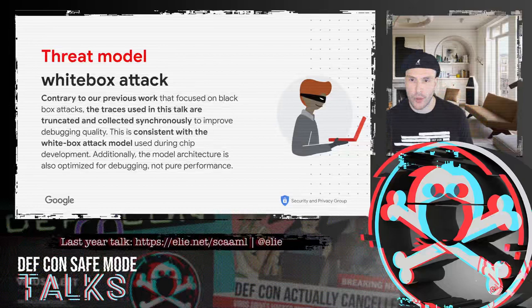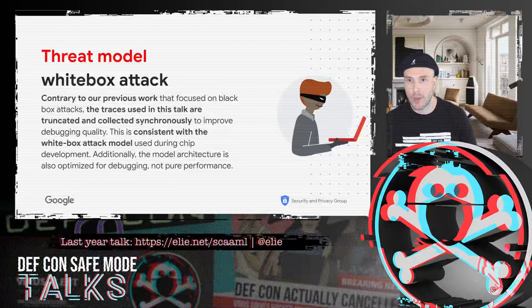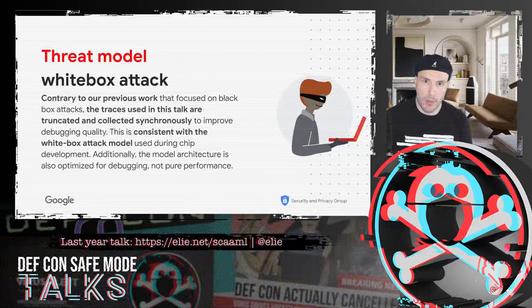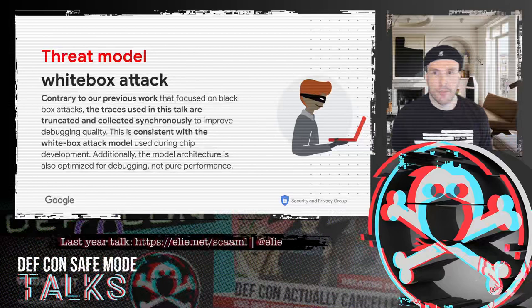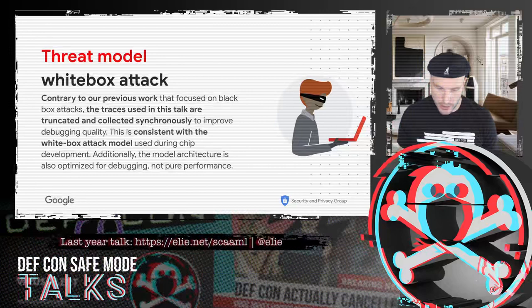The reason to do shorter captures is because machine learning has an easier time — it spends less time during training eliminating parts of the trace that are useless. This is a white box attacker model. Do not compare the models used in this talk with last year's, which are easier and smaller since the task is easier. When you're in the black box scenario, the machine learning works harder, requiring more complex and deeper architectures.